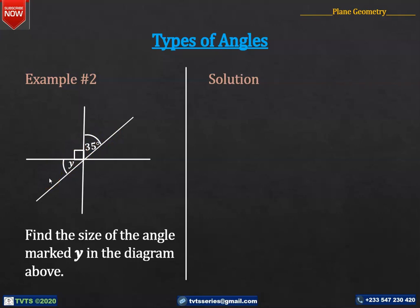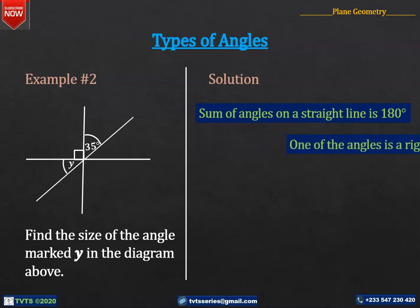Solution. The sum of angles on a straight line is 180 degrees. One of the angles is a right angle, that is, one of the angles is 90 degrees. And since 90 degrees is half of 180 degrees, these two angles should sum up to 90 degrees.